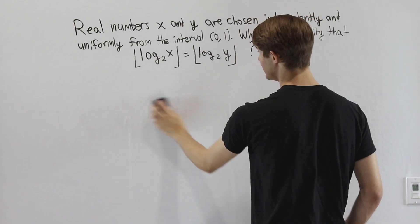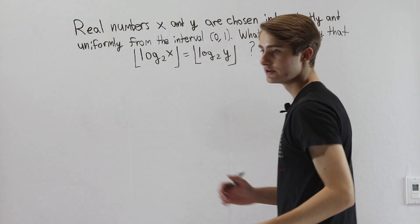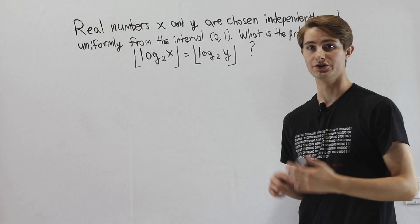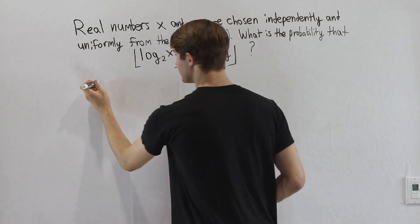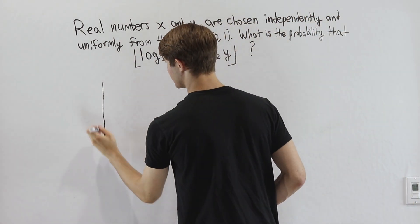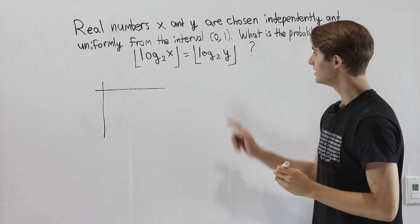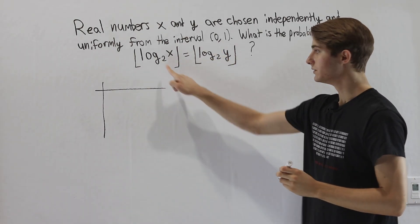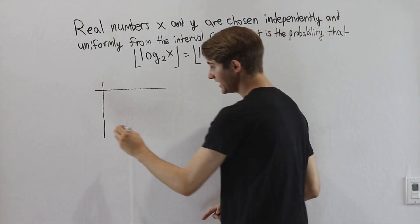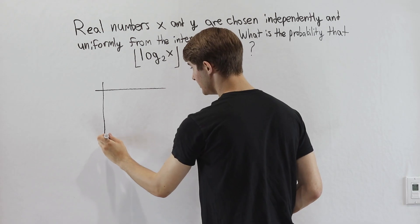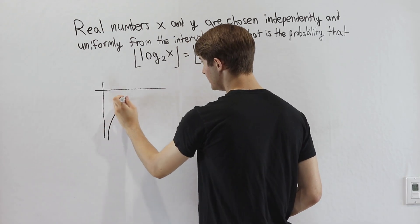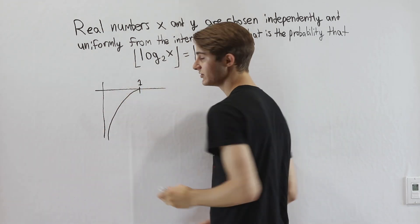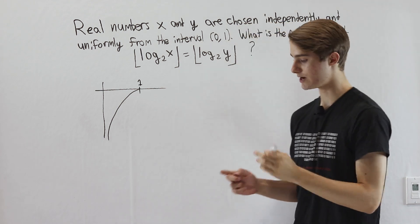It helps to start out by thinking about what these log base 2 functions are that we're dealing with. Looking at the graph, x and y are going from 0 to 1, which means this log is going to be negative — going from negative infinity all the way up to 0 at the point x equals 1 or y equals 1.